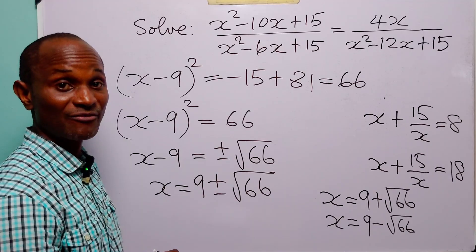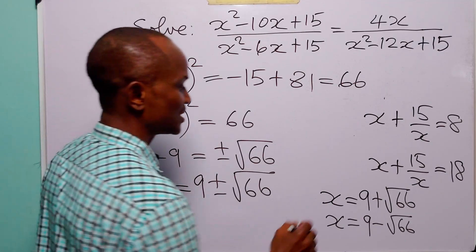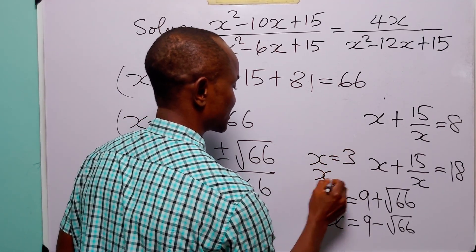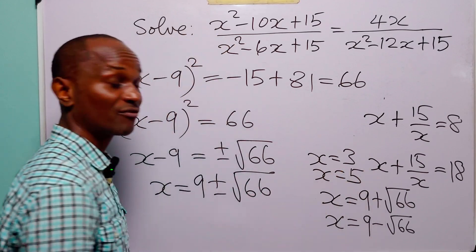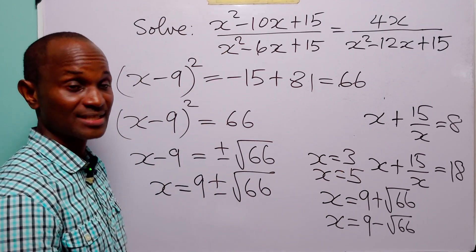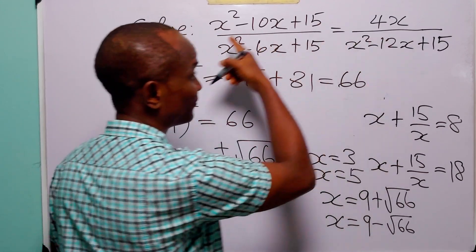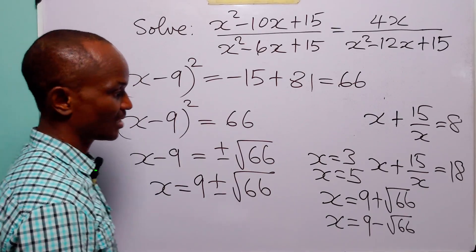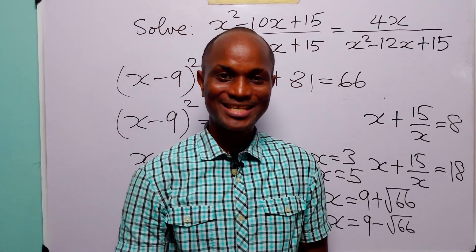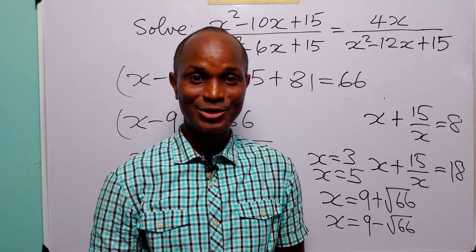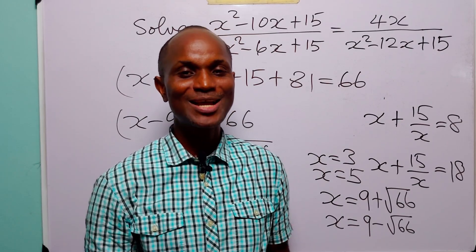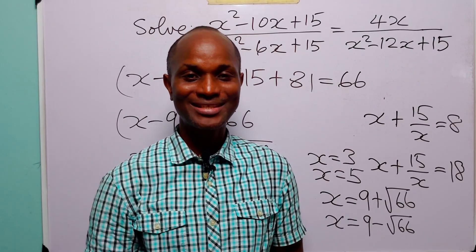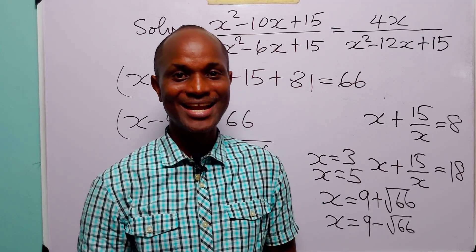Added to the other values we got — x equals 3 and x equals 5 — we now have all four values of x that satisfy the given rational equation: x equals 3, x equals 5, x equals 9 plus root 66, and x equals 9 minus root 66. And with that, we come to the end of today's tutorial. I hope you learned something new. If you enjoy such content, please subscribe to the channel, leave us a like to support the channel. Thanks for watching and see you in the next video.